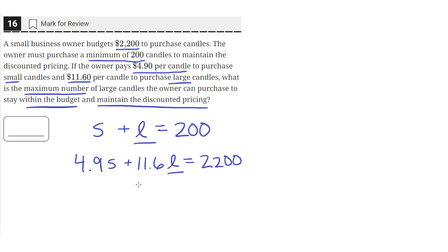There are obviously other combinations of S and L that would be below $2,200 and above 200 candles — you could just increase the number of small candles. This would keep you above the 200-candle minimum while reducing the number of large candles so you stay within the budget. But by setting them equal to these two quantities, we can find the maximum number of large candles we can purchase.